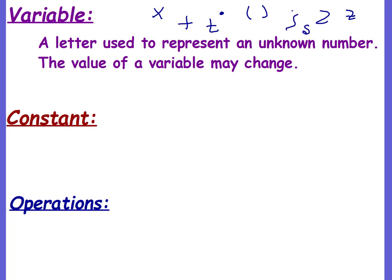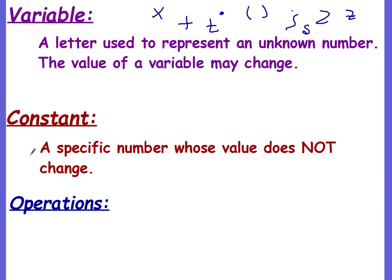Okay, a constant. A constant - a constant is a specific number whose value does not change. Okay, with our variables such as a, y, x, b, n, etc., they can stand for any number in that expression, but a constant does not change.